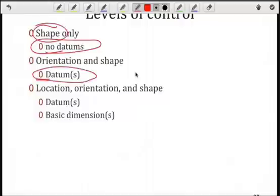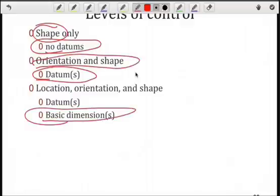If I add one or more datums, I could control the orientation along with the shape. And then, if I add a basic dimension, or multiple basic dimensions, I can control location, orientation, and shape simultaneously.